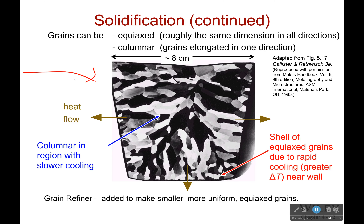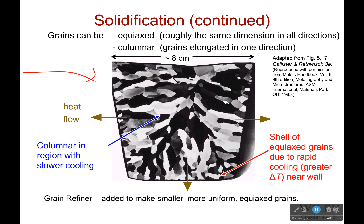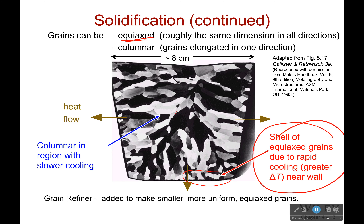This picture might show you why they call them grains — it looks a lot like what you might see in a piece of wood, a very grainy texture. Now these grains can be equiaxed, which means they're roughly the same dimension in all directions, something like little spheres or little squares. Or they can be columnar, meaning elongated in one direction. You can see equiaxed grains here at the bottom — a bunch of small dots — and that was due to rapid cooling near the wall of this particular metal.